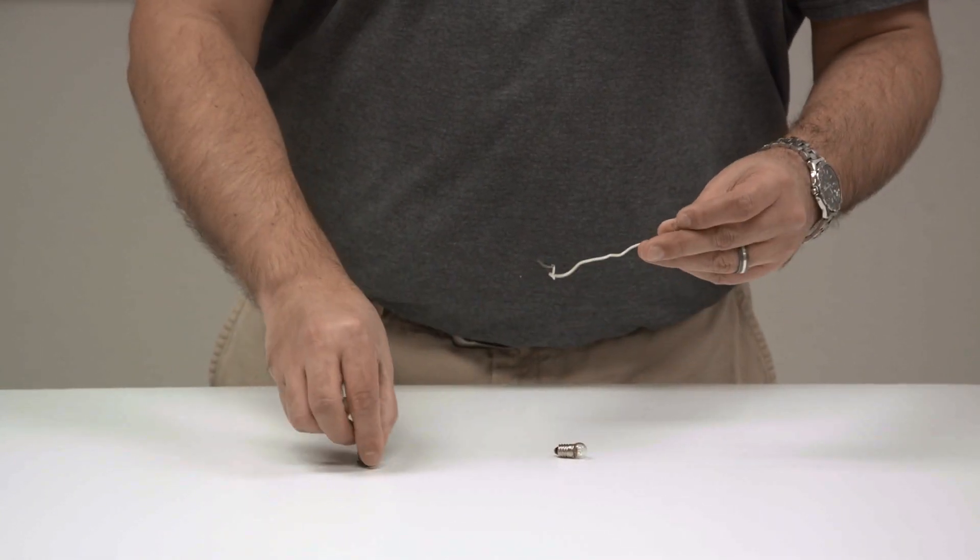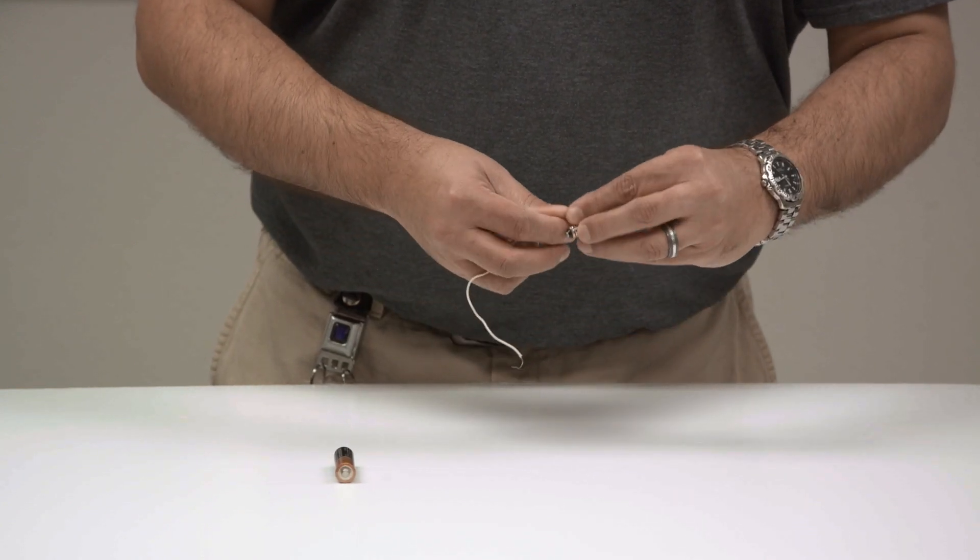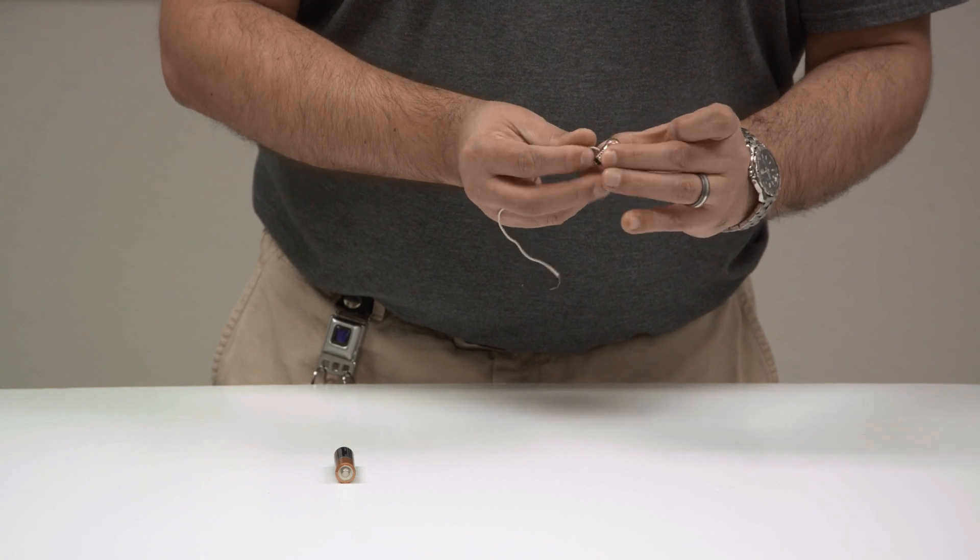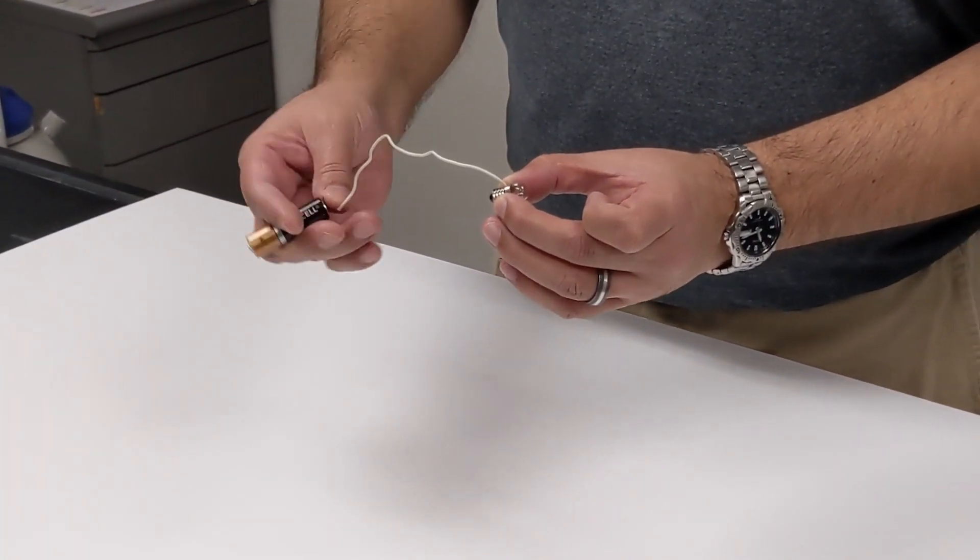So I'm going to take the end of the circuit and connect it to this light bulb, so that the electricity is going to go into the light bulb from the side. I'm going to take the other end and connect it to the battery.